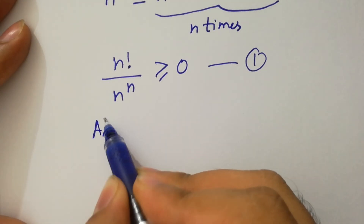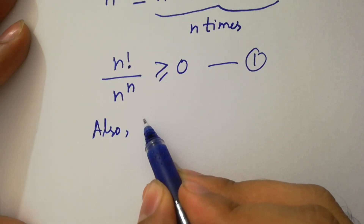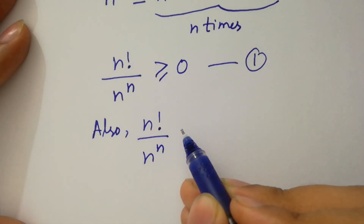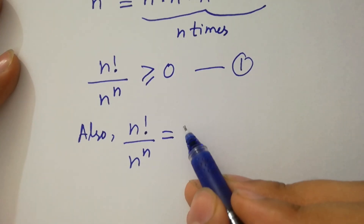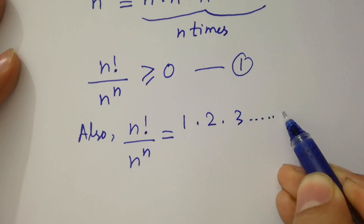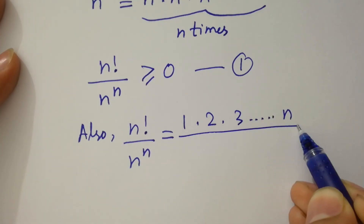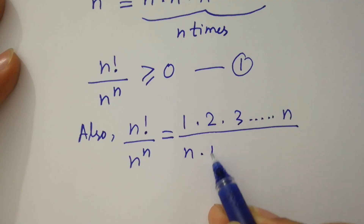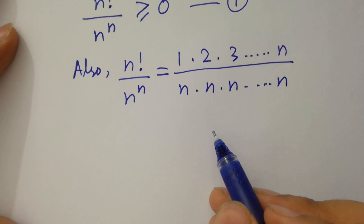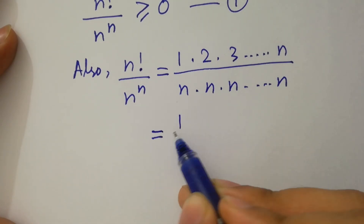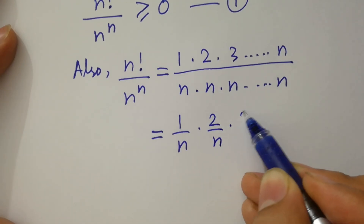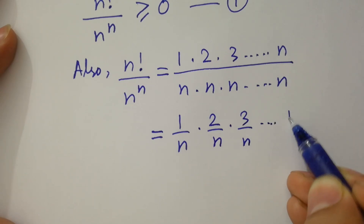Also, n factorial over n to the power n equals (1/n) · (2/n) · (3/n) · ... · (n/n), which is the product of fractions 1 over n, 2 over n, 3 over n, up to n over n.